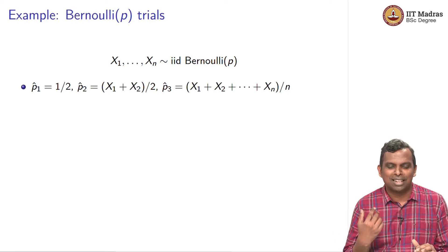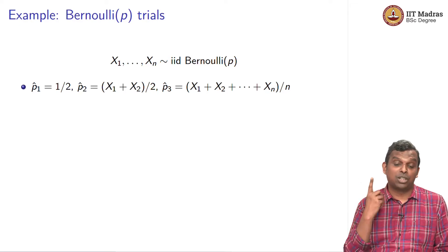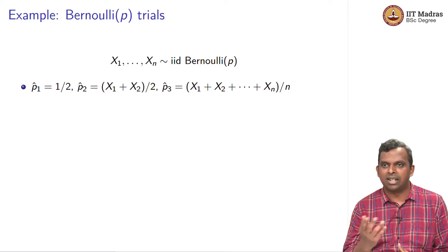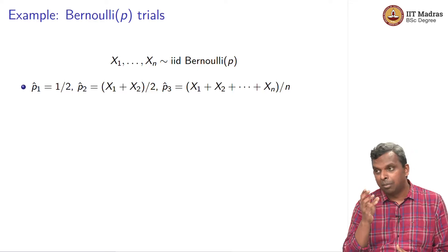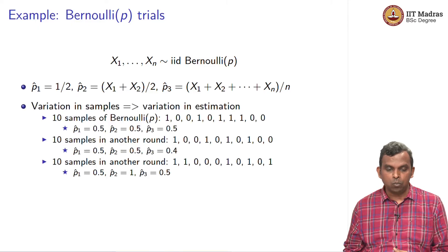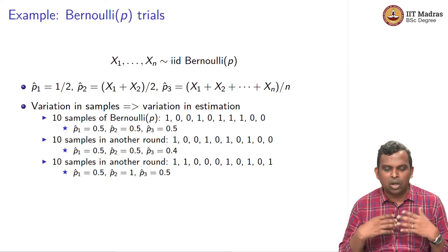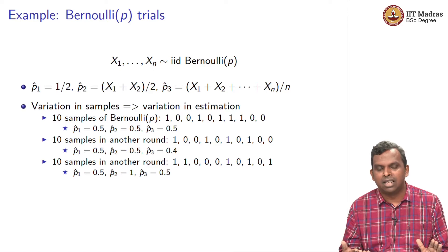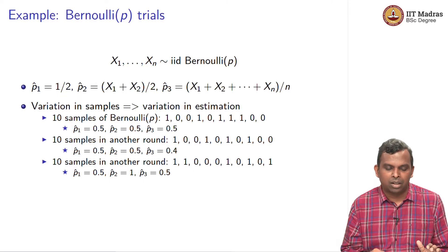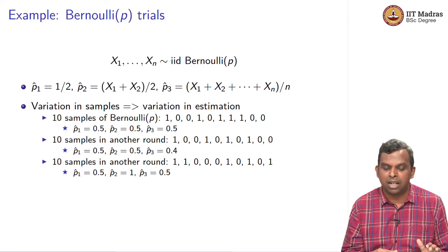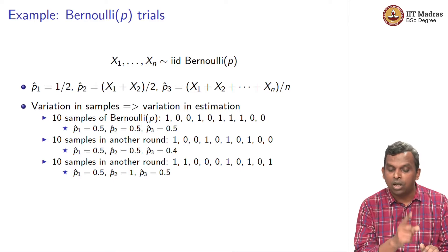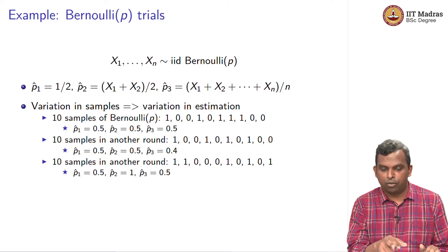Let us come back to our example. Here, x1 through xn is IID Bernoulli p. I have three estimators for p and I want to think about their errors. Let us look at a few samplings from this distribution and see how the three estimators are doing. Here are three different samples from the same value of p. With the first 10 samples being 100, 101, 1100 — p1 hat is always 0.5, p2 hat is 0.5, p3 hat is also 0.5.